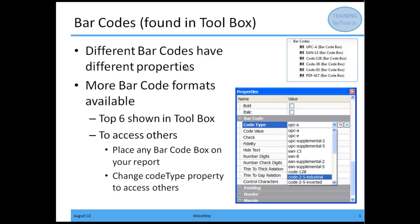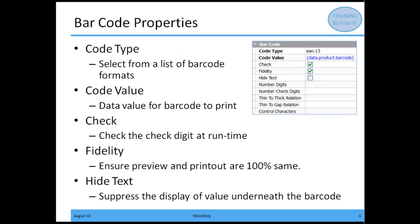Different barcodes are going to have different properties. So if I put down a UPCA, it's going to have different properties than if I put down a Code 128. When you go to the properties box, you're going to see a section called barcode. The first one is going to be the code type, and that's the list of barcode formats that we support in Report Designer.